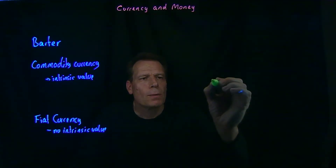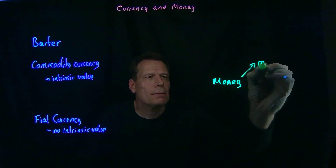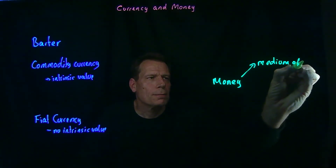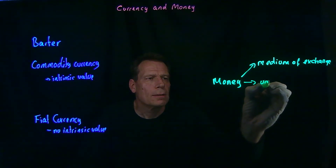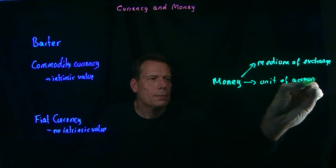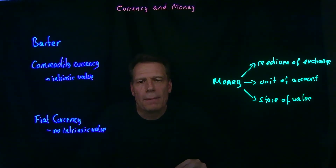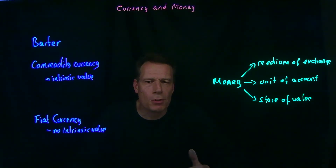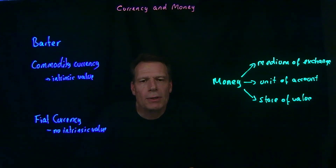So what do economists mean by money? Anything that satisfies three criteria is money: it has to be a medium of exchange, a unit of account, and a store of value. There are many ways to store value — you can buy Amazon stock — but you can't use that at the supermarket to buy milk or eggs, so it's not a medium of exchange. You can store value in real estate, but you can't use real estate to buy milk or eggs, and it's not a good unit of account.